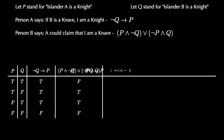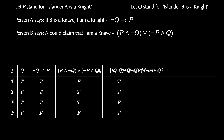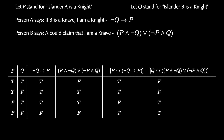We employ the biconditional between the proposition P and the proposition that person A said. The reason we do this is because knights will tell the truth and knaves will always lie — the biconditional will find if there's a truth teller that's lying or a liar that's telling the truth. Now we do the same thing with proposition Q and the proposition that person B said. Again, the biconditional will flag if a truth teller told a lie or a liar told the truth, which is not supposed to happen — the biconditional returns false in these situations.